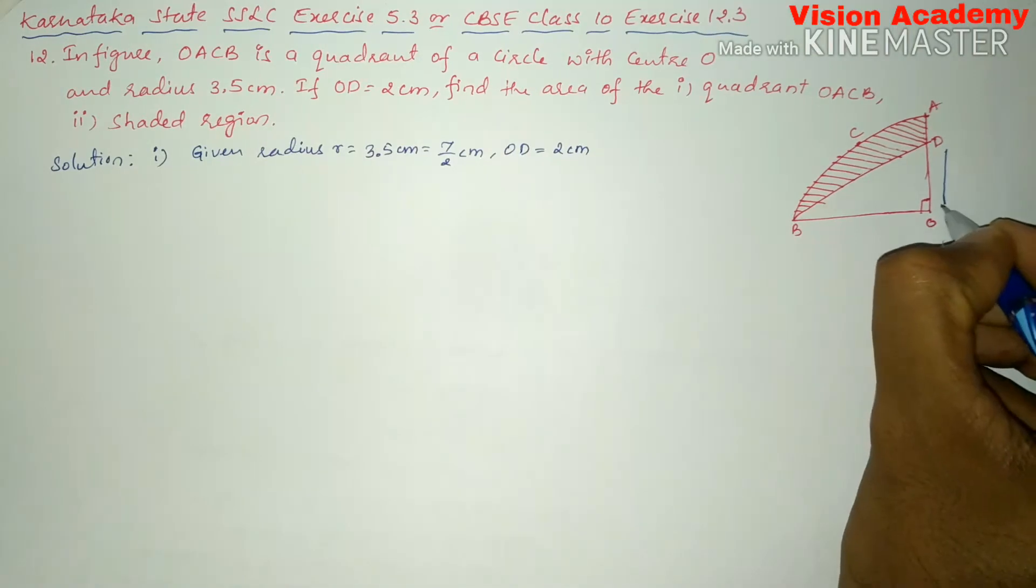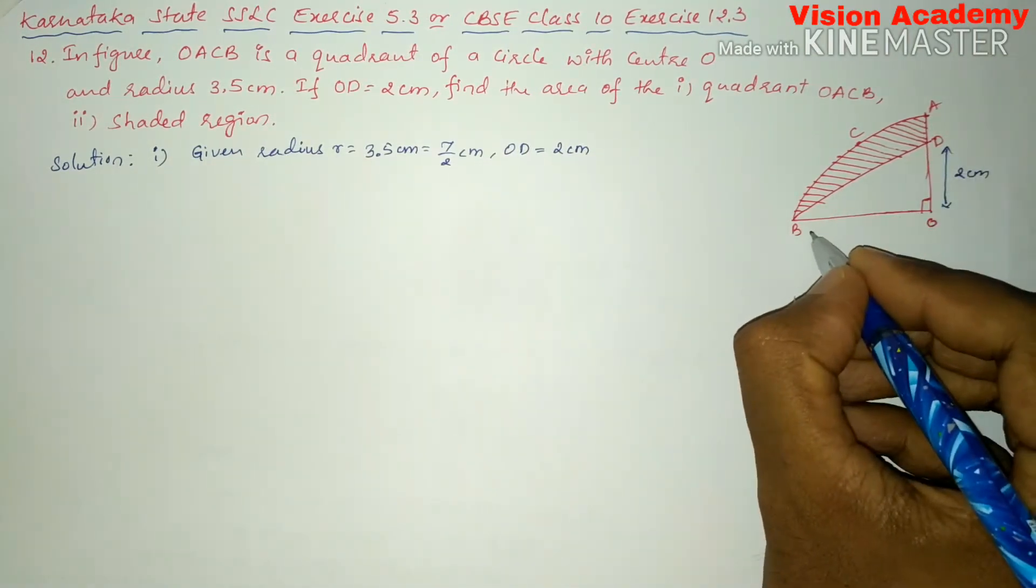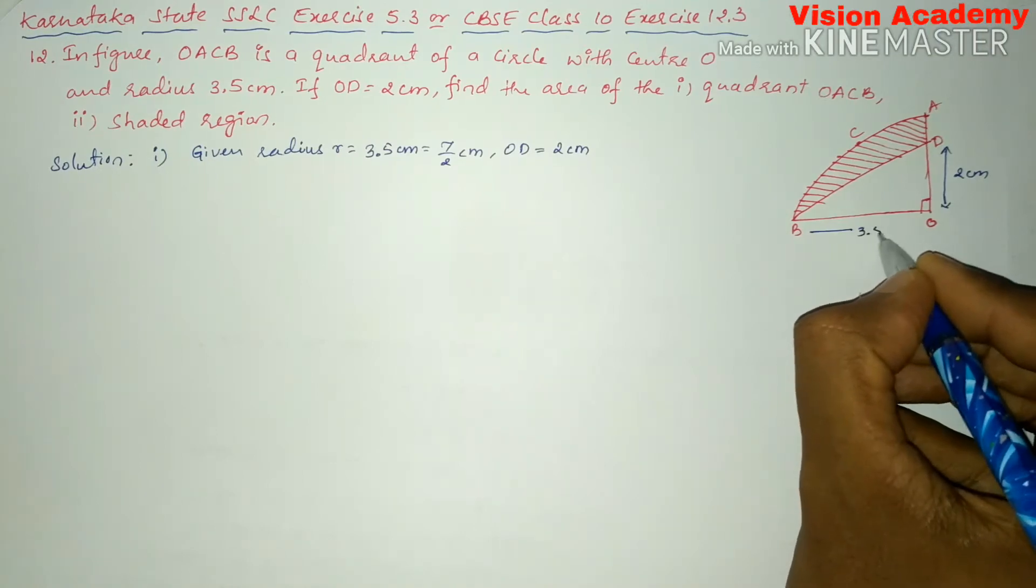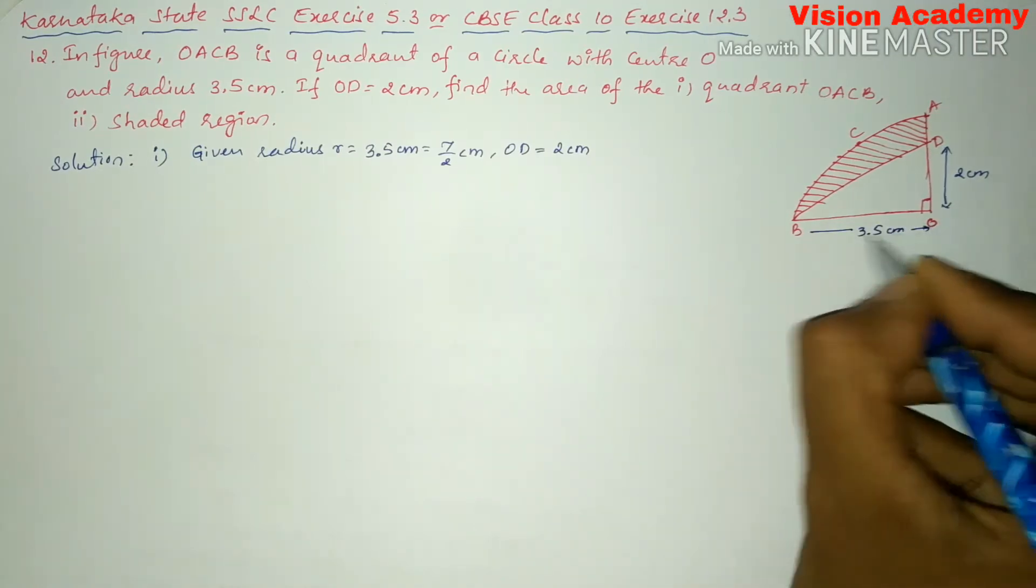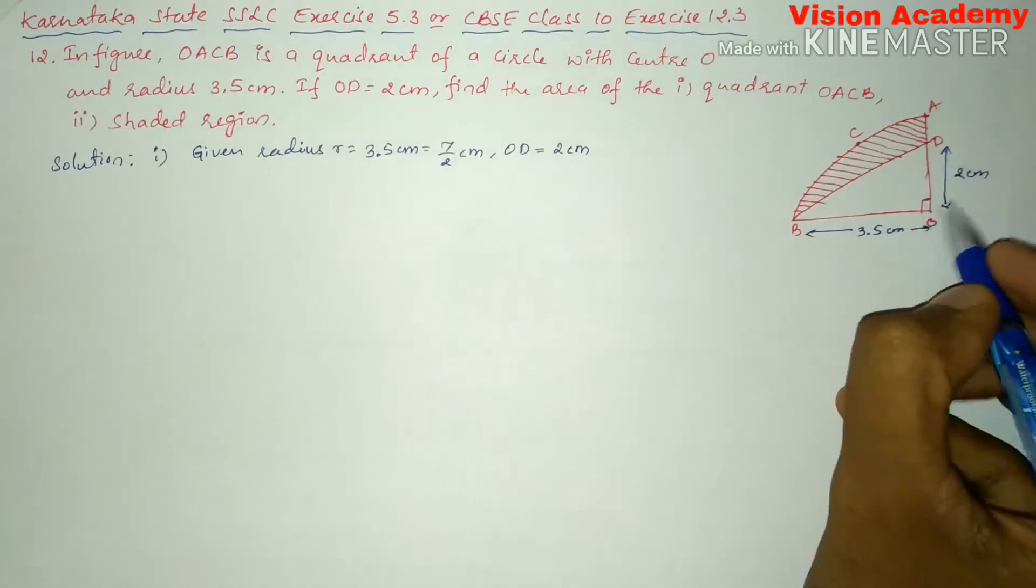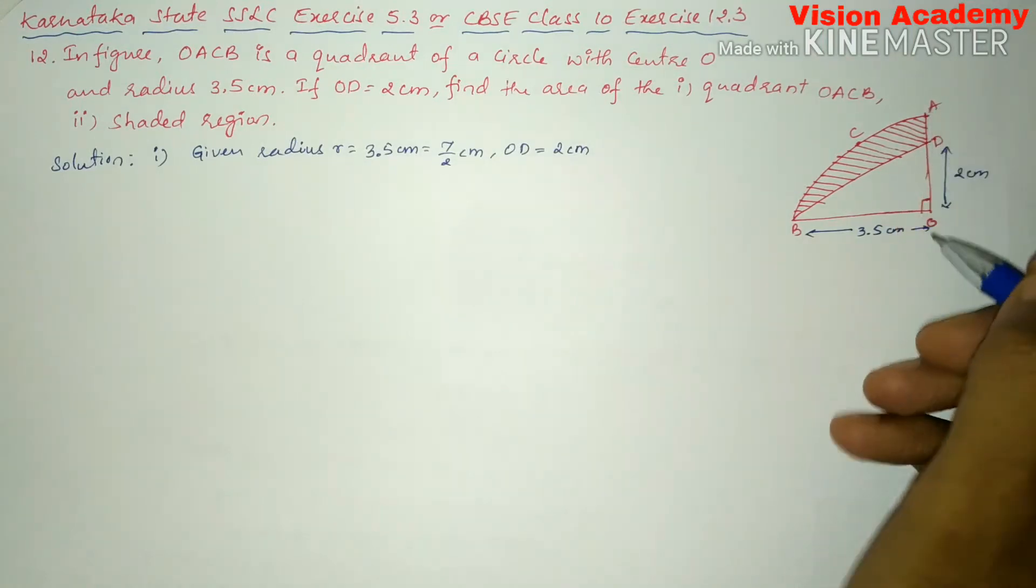This length OD is 2 cm, and radius of the circle is 3.5 cm. So that is, OB is 3.5, which is equal to OA.